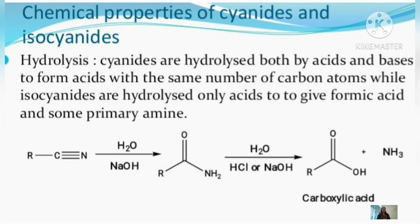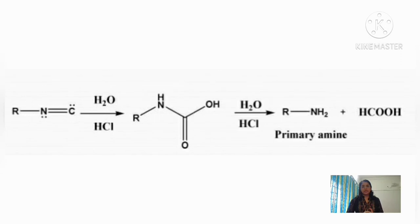Next, the chemical properties: hydrolysis. Cyanide undergoes hydrolysis in both acidic and basic media, giving a carboxylic acid containing the same number of carbon atoms. Isocyanide, however, can only be hydrolyzed in acidic medium. Upon hydrolysis, isocyanide gives formic acid (HCOOH) as one product and a primary amine as the other product, depending on the alkyl group in the isocyanide.